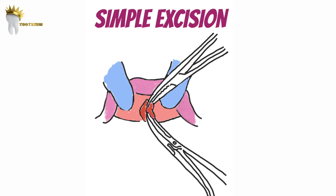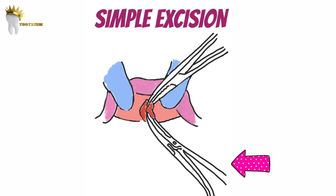In the simple excision technique, we need two curved hemostats. One hemostat is placed on the top part of the frenum — the part that is towards the anterior nasal spine — holding the frenum to the depth of the vestibule. The other hemostat is placed on the bottom part of the frenum towards the alveolus.